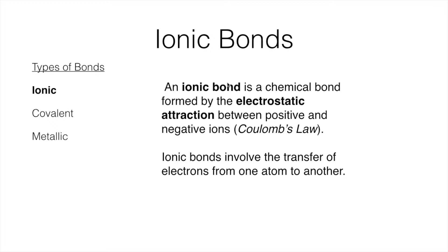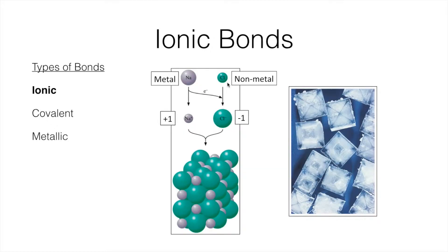Ionic bonds are bonds that result when we have an electrostatic attraction between a positive and negative ion. These are largely governed by Coulomb's law, which we'll explore in a bit. They involve transfers of one or more electrons from one atom to another. A very typical example is sodium chloride — one of the electrons from the sodium atom is transferred to the chlorine atom, giving us a positive sodium and a negative chlorine, which combine in what we call a crystal lattice.